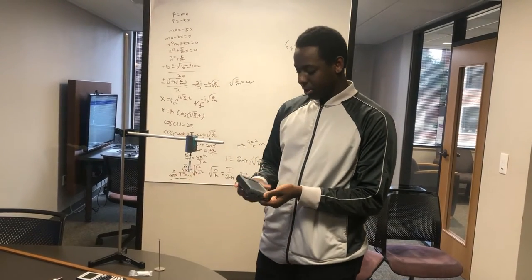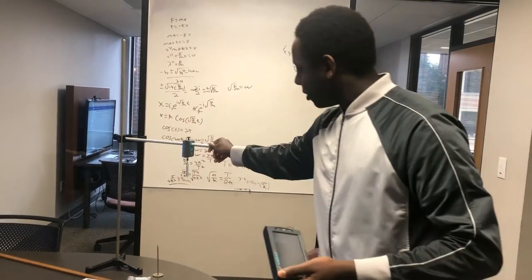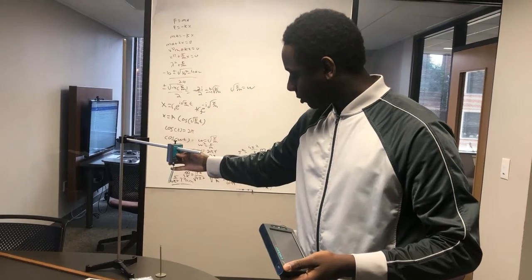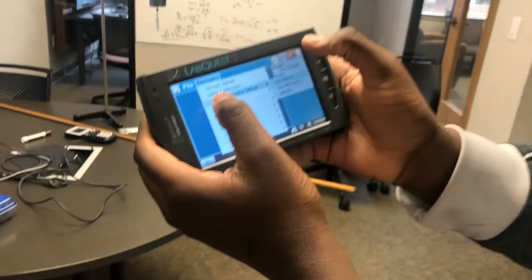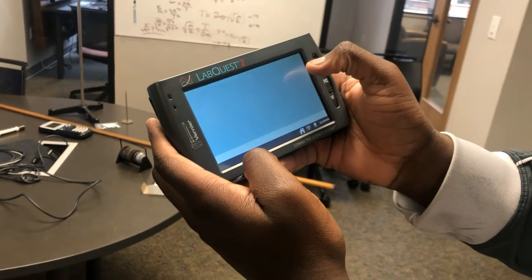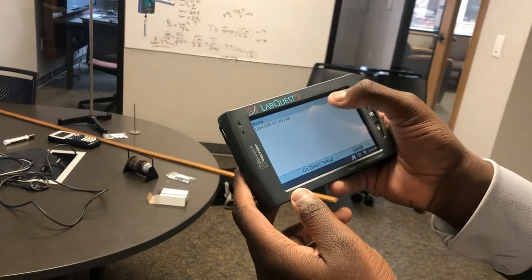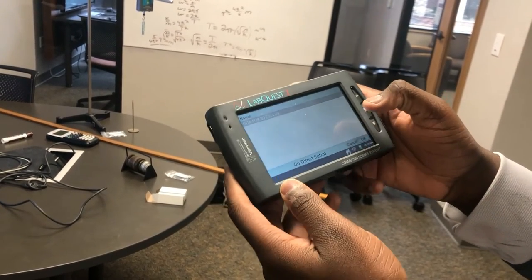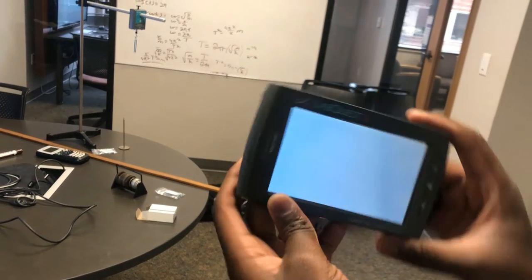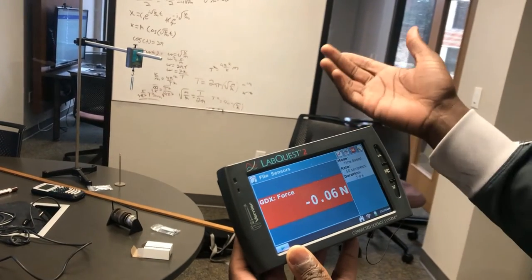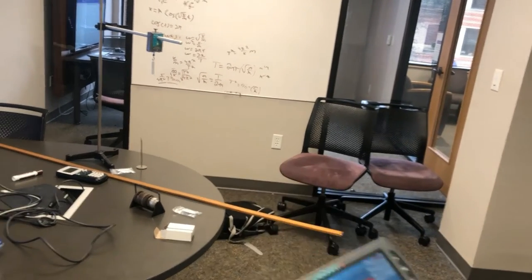After all this is assembled, you take the LabQuest, you turn on your force sensor, then on the LabQuest you go to sensors, wireless setup, and go direct. Wait for it to connect, then connect to the force sensor. Once you have it connected, make sure to zero out your force sensor, and then you are ready to start collecting data.